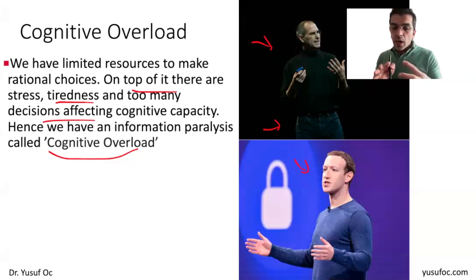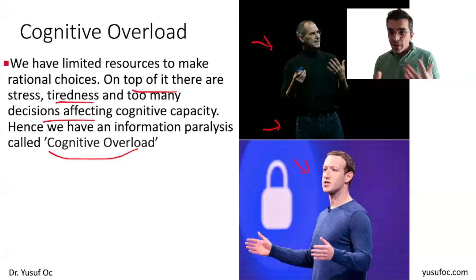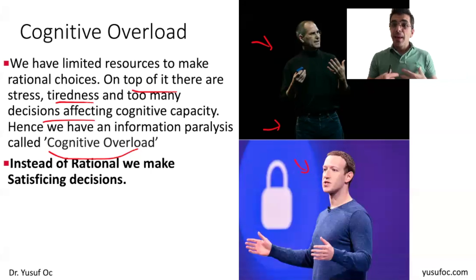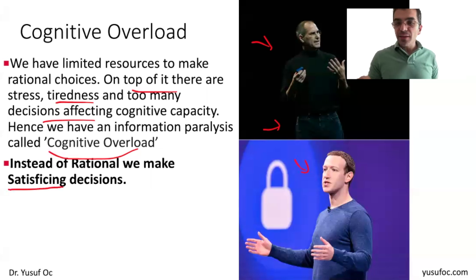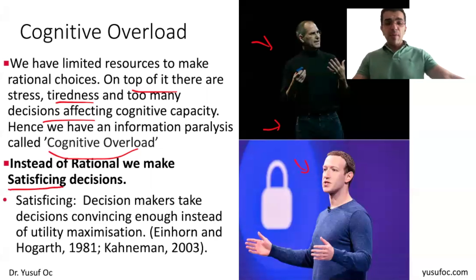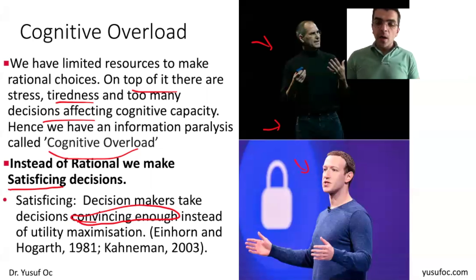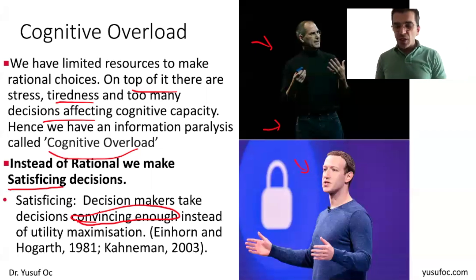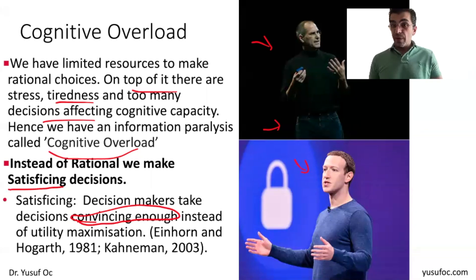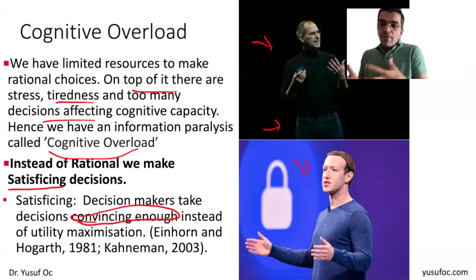Our brain optimizes its resources and tries to take the easy route, making us lazier by nature. Instead of fully rational decisions, our brain pushes us toward satisficing decisions. Satisficing means decision-makers take decisions that are convincing enough rather than utility-maximizing. For example, when buying a washing machine, instead of analyzing all the benefits and costs, you decide because your cousin bought it and was really happy — that's enough evidence.